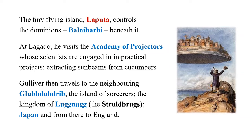From Laputa, Gulliver goes to its capital Lagado, where there is an Academy of Projectors — a satire on the Royal Academy of England. Scientists there engage in impractical projects; one famous project is how to extract sunbeams from cucumbers. This satirizes the supposedly useless research of the Royal Academy.